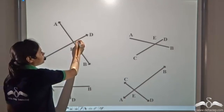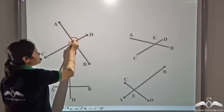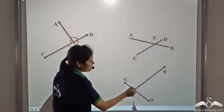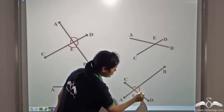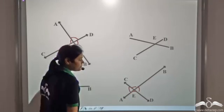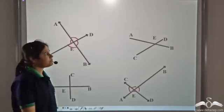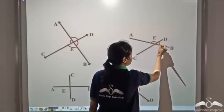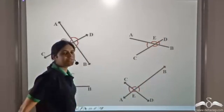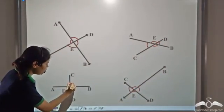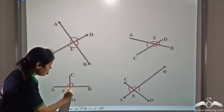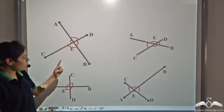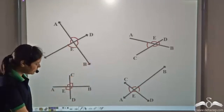Let us see. These lines meet to form four angles, these two lines meet to form four angles, these two line segments form four angles, and these two line segments form four angles. So four angles are formed in each case.